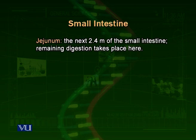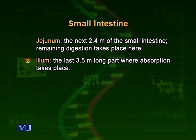Then comes the jejunum. Jejunum is about 2.4 meters in length — it is very long. In the jejunum, digestion of food continues. The remaining digestion continues here, as the lipids, carbohydrates, and proteins have already been broken down into smaller pieces in the duodenum, and this process continues further. The jejunum is mainly for digestion — it breaks down the already broken parts into even smaller pieces. Then comes the third part, ileum.